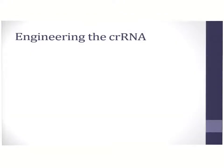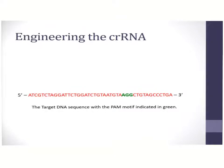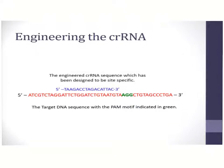In order to engineer the crRNA, one needs to identify the target site. The first thing one looks at is the protospacer adjacent motif, which is indicated in green. In this case, the protospacer adjacent motif is AGG. The crRNA sequence is designed to be complementary to the target DNA sequence, as indicated in blue.